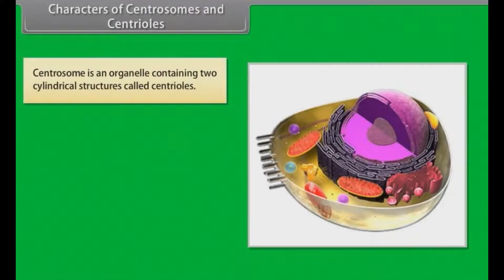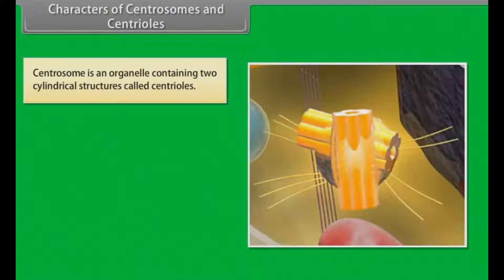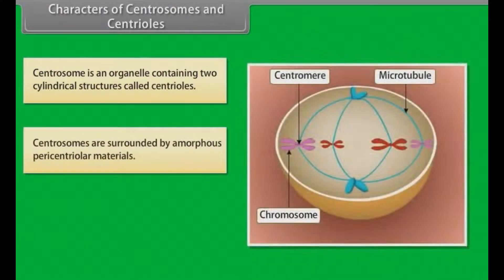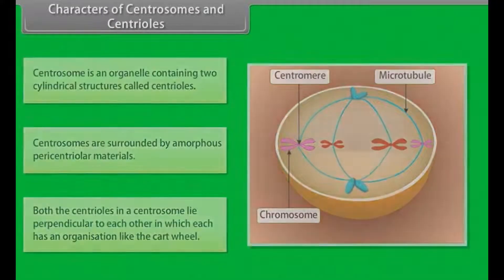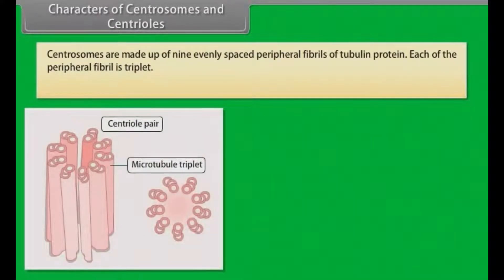Characters of centrosomes and centrioles: Centrosome is an organelle containing two cylindrical structures called centrioles. Centrosomes are surrounded by amorphous pericentriolar materials. Both the centrioles in a centrosome lie perpendicular to each other, in which each has an organization like the cartwheel. Centrosomes are made up of nine evenly spaced peripheral fibrils of tubulin protein, and each of the peripheral fibrils is a triplet.